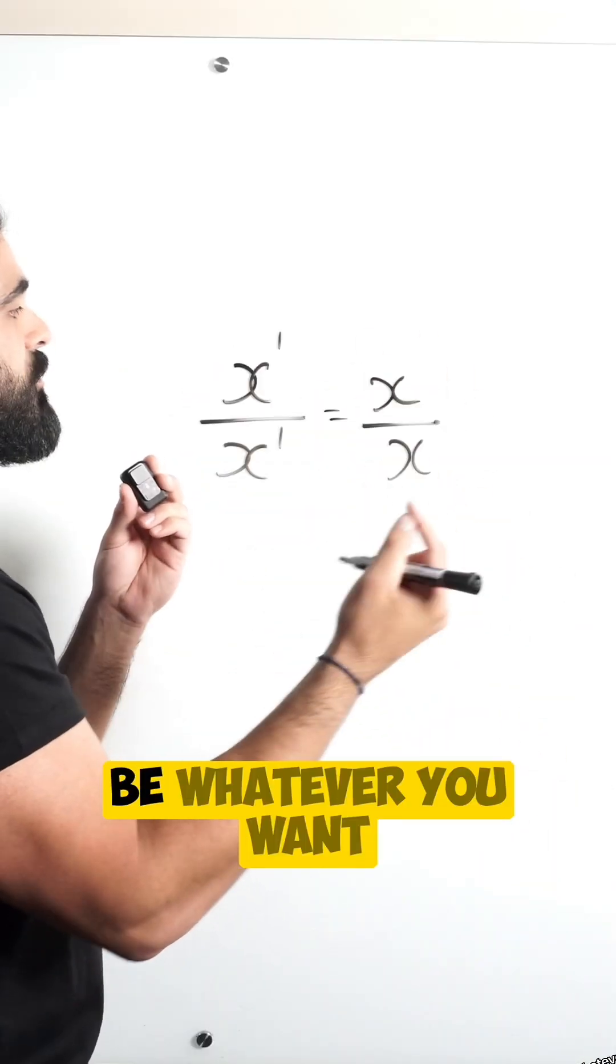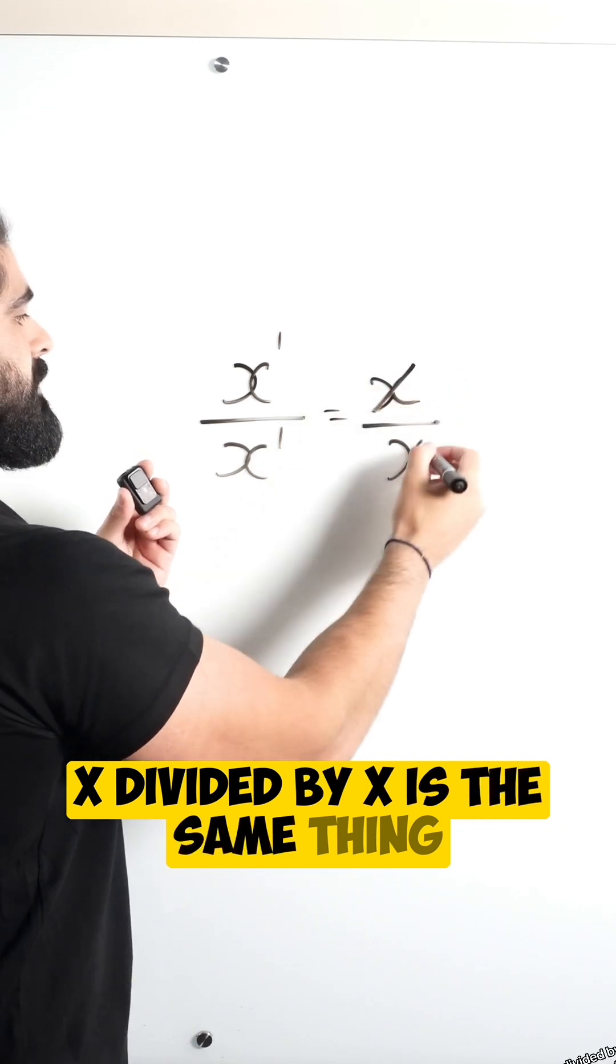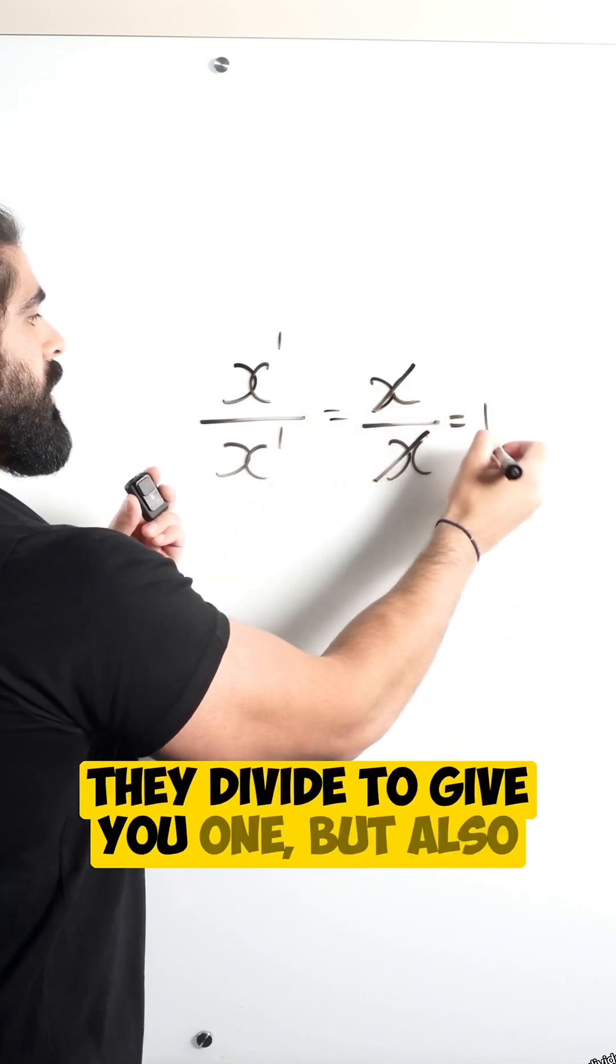Remember we said x could be one, two, three, whatever you want. x divided by x is the same thing. They divide to give you one.